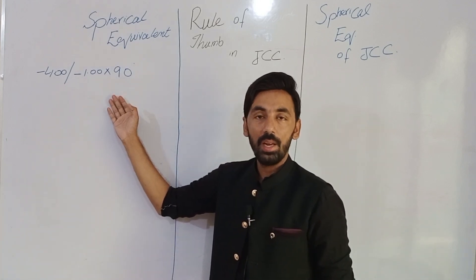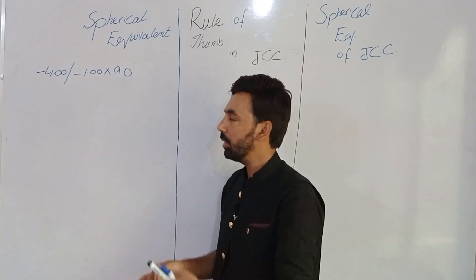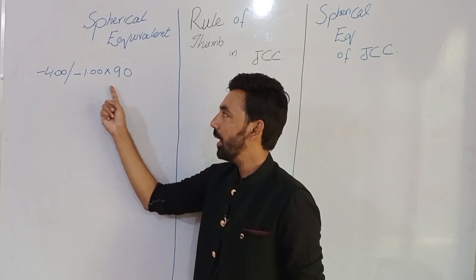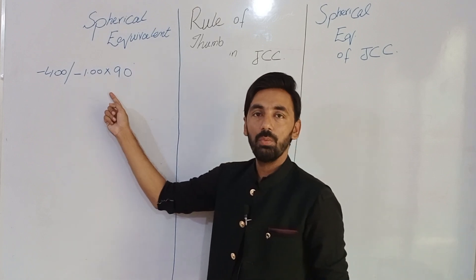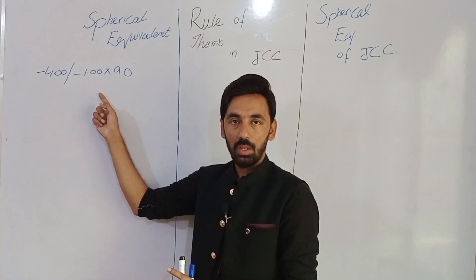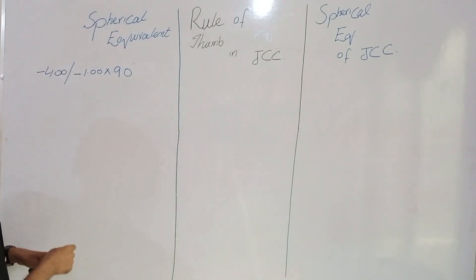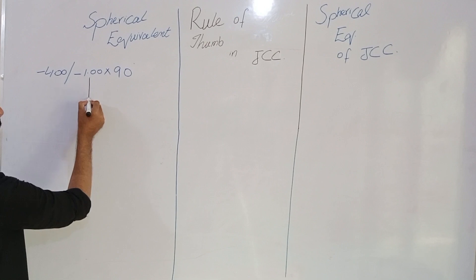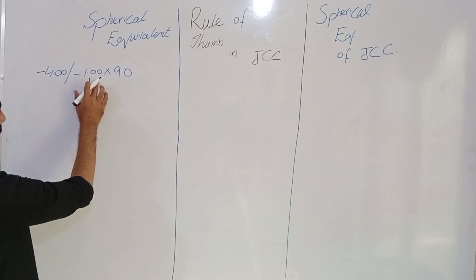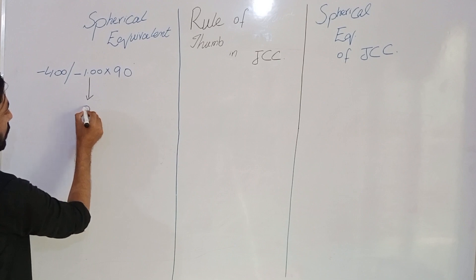This could also apply when a prescription of minus four sphere and minus one cylinder at 90 degrees is not available in your stock on an urgent basis. Then you will take the spherical equivalent. The formula is: take half of the cylinder — the total cylinder is minus one, so half is 0.5.